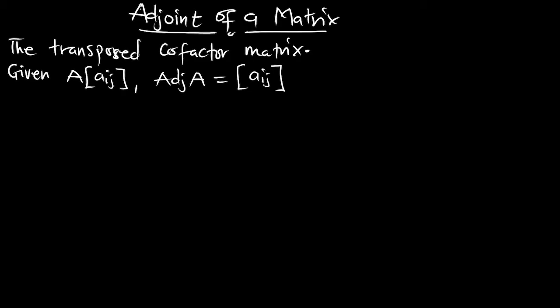The adjoint of a matrix is the transposed cofactor matrix. You can check out the previous episode to see how we find the cofactor of a matrix — we will also go through it in this episode. Let's take an example.